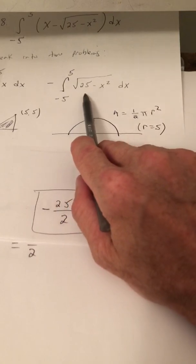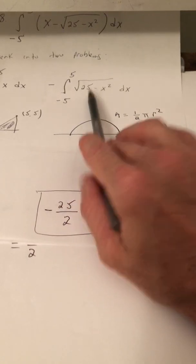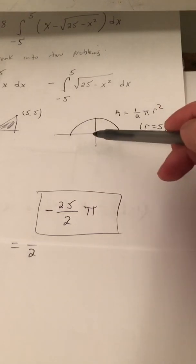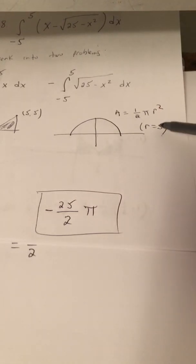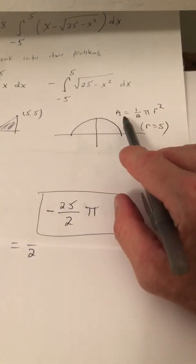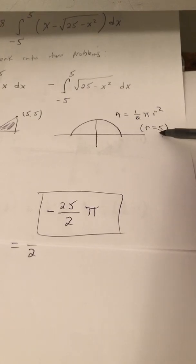Now, for the other one, you have to recognize this as being a semicircle. So we have a semicircle. The center is at the origin, and the radius is 5. So the area of a semicircle is half the area of a circle. So that's 1/2 π r squared, where r is 5.